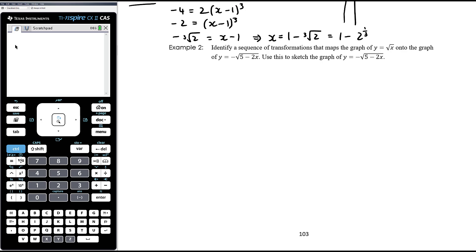Okay, example 2. Identify a sequence of transformations that maps the graph of y equals root x onto the graph of y equals negative square root of 5 minus 2x, and use this to sketch the graph. So y equals root x becomes y equals negative square root of 5 minus 2x.